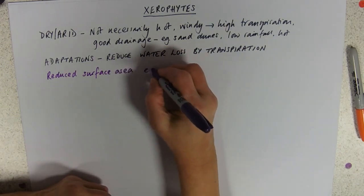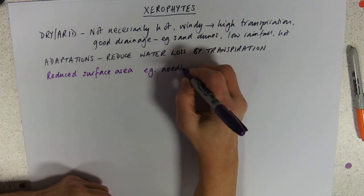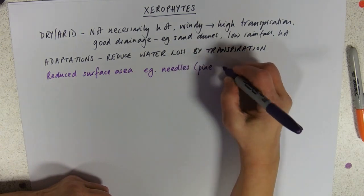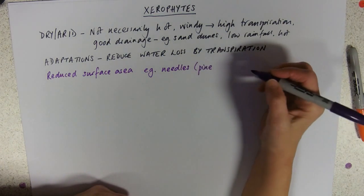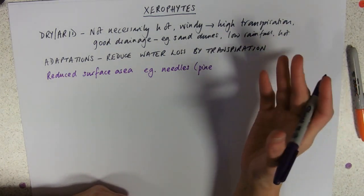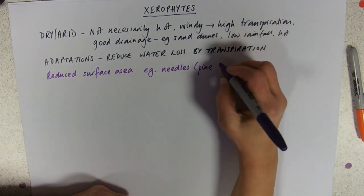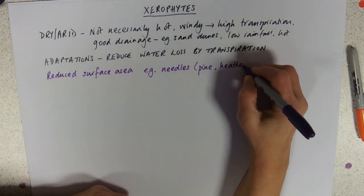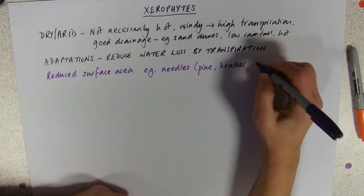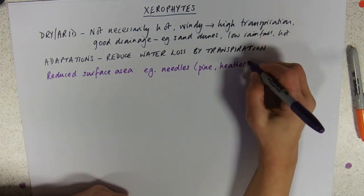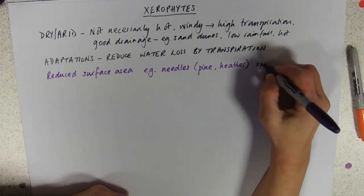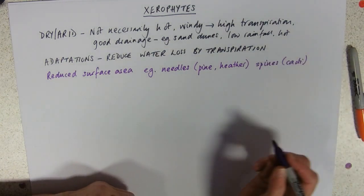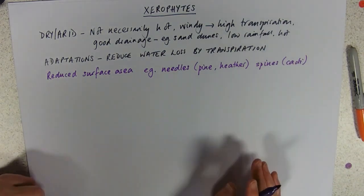An example would be plants with needles, like pine trees - they're altitude trees, so they tend to be cold but windy, with low water availability and lots of drainage. So you've got pine, heather - which we call the ericaceous species. Or leaves could be reduced right down to spines and not used for photosynthesis at all, with cacti being a prime example - they tend to do their photosynthesis through their stems.